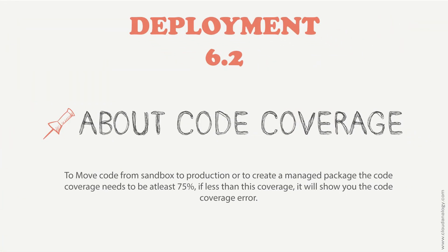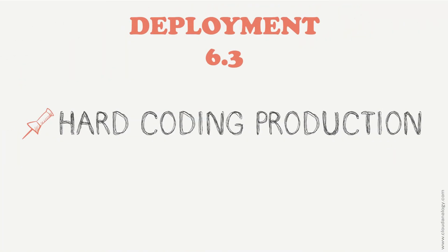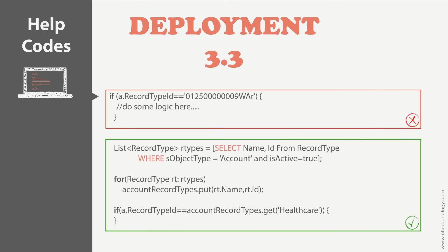The second point is code coverage — Salesforce mandates 75% overall code coverage and greater than 0% code coverage for triggers. We should tend to get code coverage above 95% for a future healthy and low-maintenance org. The third point is hard coding in production — don't try hard-coding IDs unless it is absolutely necessary. In a live production org, we may have a situation where we are not able to define a page component or record or specific element by name or unique ID, then we can take the help of hard-coded IDs.